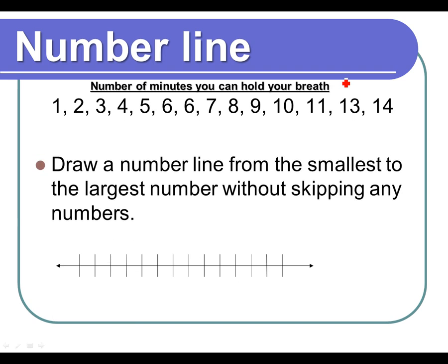Now let's get to graphing it. Draw a number line from the smallest to the largest without skipping any numbers. Depending on the data, you may have to be a little creative with how you set up your number line. My data spans from the lowest number, 1, to the highest number, 14. But if the lowest is 1 and the highest is like 60, you're probably not going to write every number — you'd go by 5s (0, 5, 10, 15, 20) or by 10s (10, 20, 30, 40). In this instance, I'm only dealing with units of 1 and we're only going up to 14, so it's not a big deal.